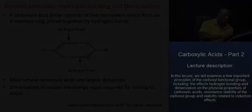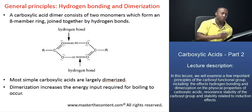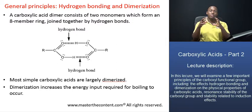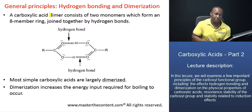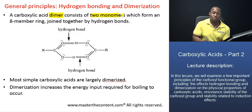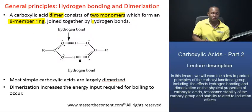What can actually happen in the case of a carboxylic acid is that two molecules of the acid can come together and hydrogen bond to form an eight-membered ring that is referred to as a dimer. And that's what we have on the screen right now. A carboxylic acid dimer pretty much consists of two monomers, two contributing acid molecules, which form an eight-membered ring that is joined together by hydrogen bonds.